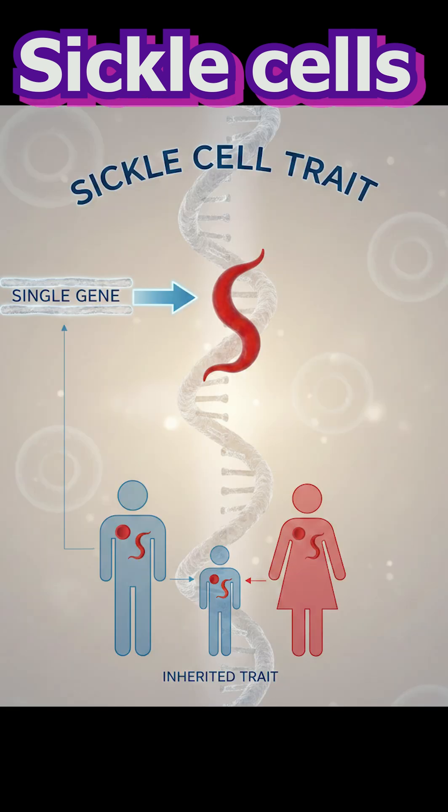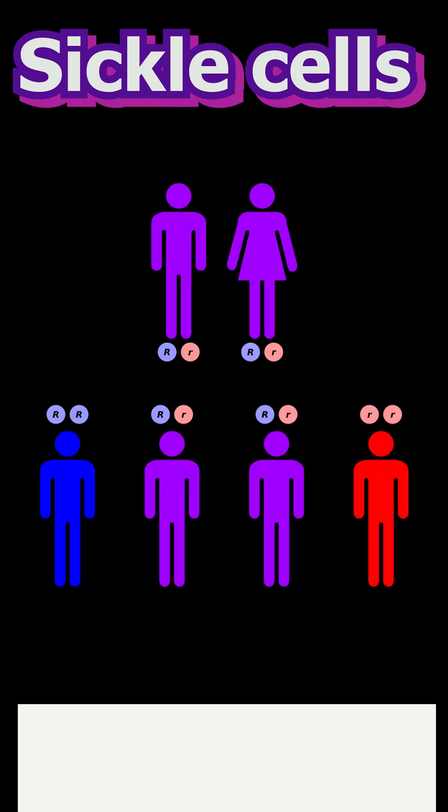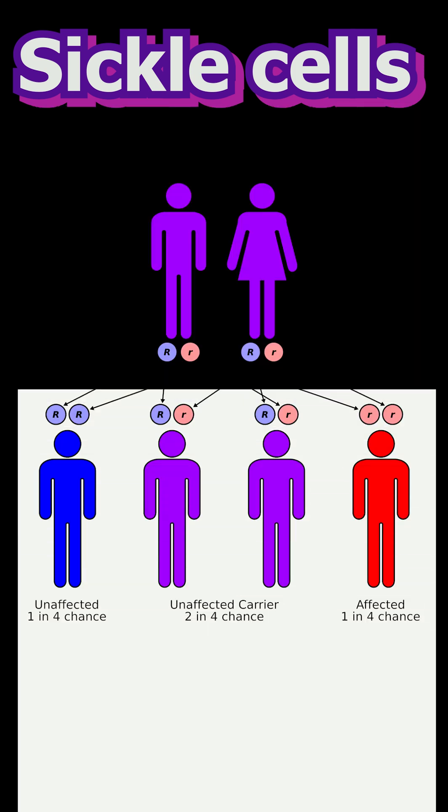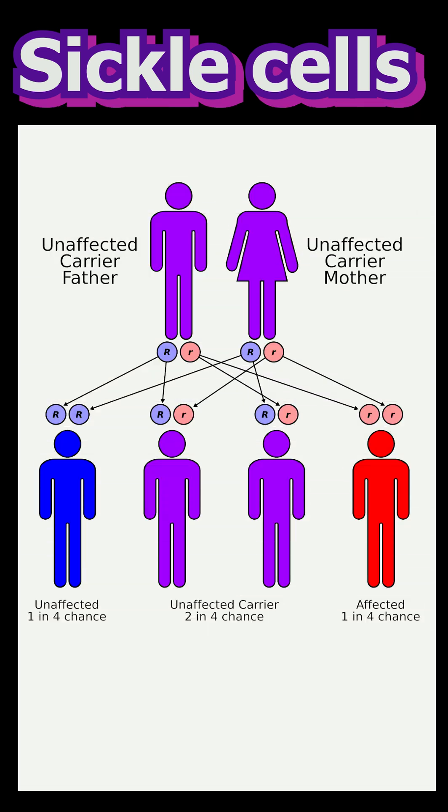Sickle cell trait means a person has inherited one sickle cell gene and one normal gene. Sickle cell trait is not a disease and does not cause health problems under normal conditions. Sickle cell disease means a person has inherited two sickle cell genes from both parents.